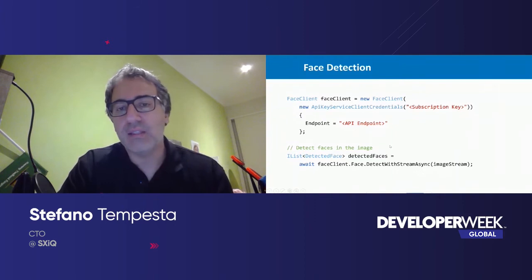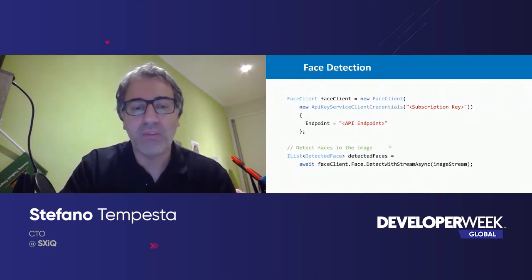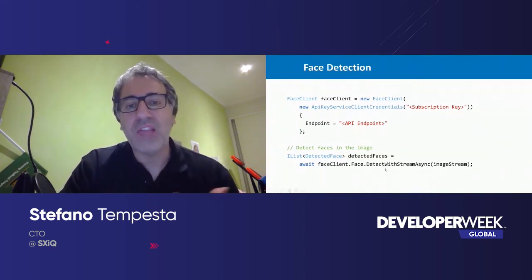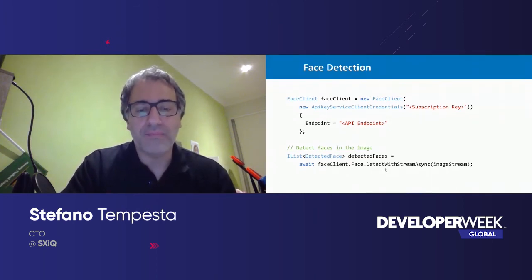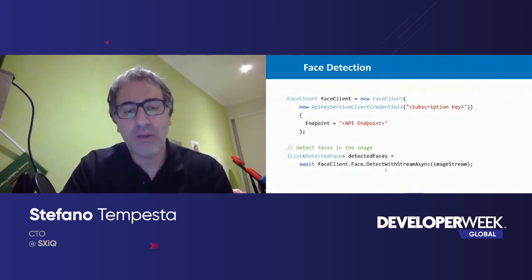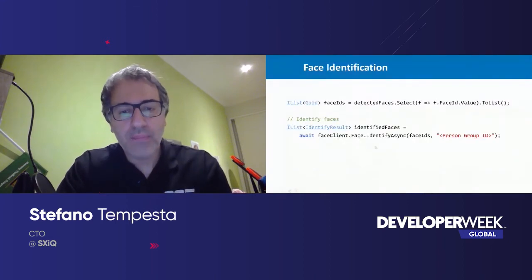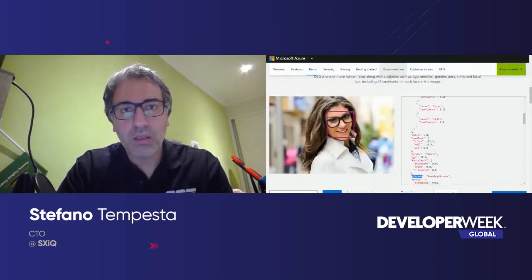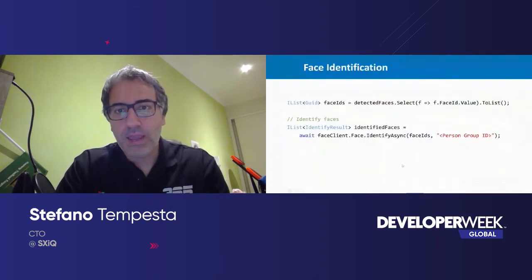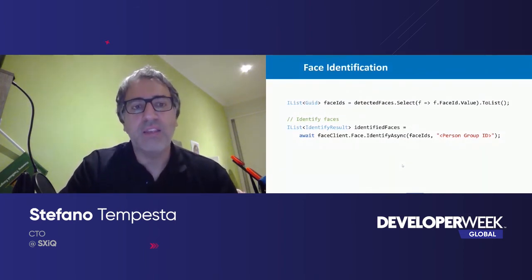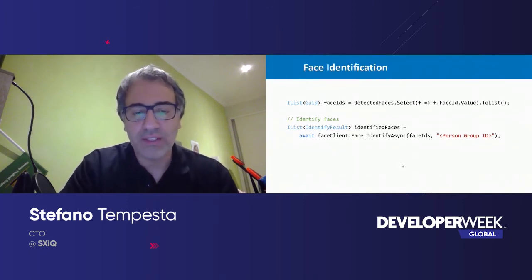You create a face client with the necessary subscription key and endpoint that you have previously provisioned in Azure Cloud, then invoke DetectWithStreamAsync to call the API, passing the image you are testing, and receive as a response a list of detected faces. After detection, you also get identification — again, two lines of code. The NuGet package makes it extremely simple: you get a list of all the faces that have been identified.